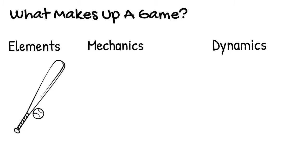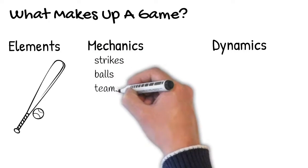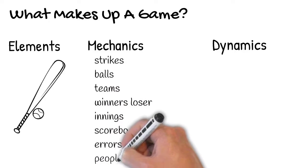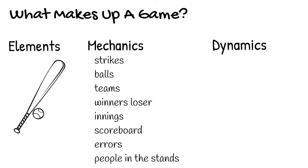It doesn't make up the game, and there's certainly lots of different elements. Mechanics, though, are what give the elements meaning. For instance, in the game of baseball we have strikes and balls, we have teams, we have winners and losers, there's innings, the scoreboard goes up, we have errors. There's all sorts of mechanics that go into baseball.